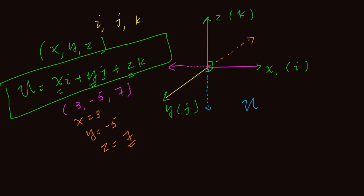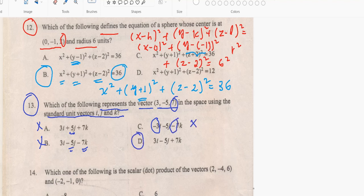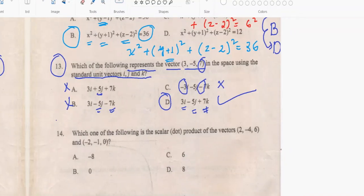So this is our 3D vector. The vector u is equal to: three times i plus minus five times j plus seven times k. This simplifies to three i minus five j plus seven k. Checking the choices: choice A has j positive, choice B has j negative with the correct signs — so our answer is choice D: positive three i, negative five j, positive seven k.